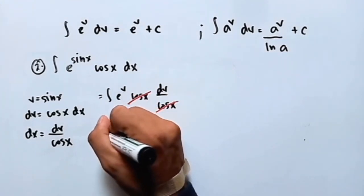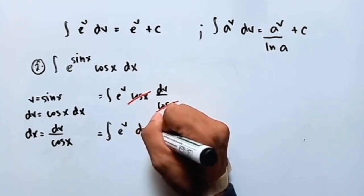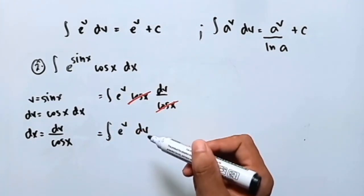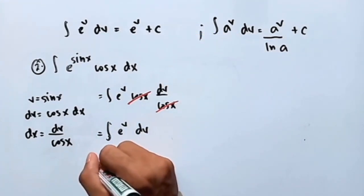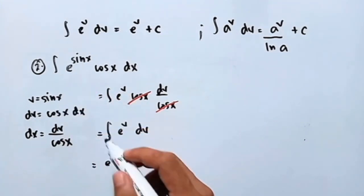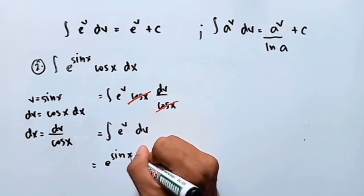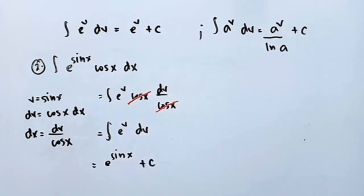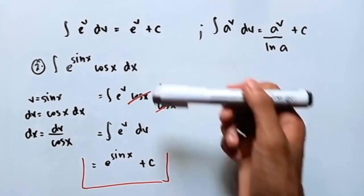You notice that cos x will be cancelled out. So this is equal to the integral of e raised to v dv. The integral of e raised to v dv is e raised to v plus c. So this is equal to e raised to v, but v is sin x, so the final answer is e raised to sin x plus c. That is the integral of e raised to sin x times cos x dx.